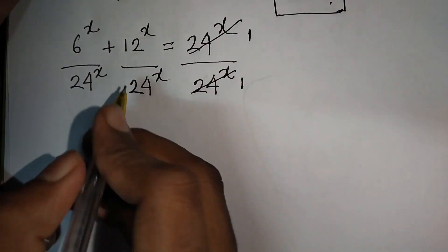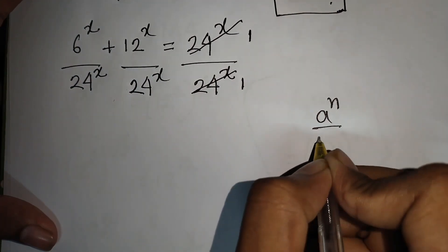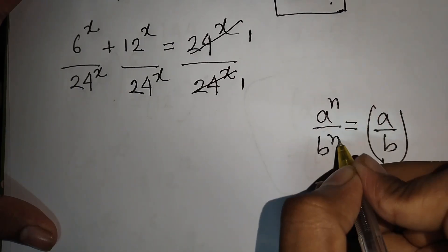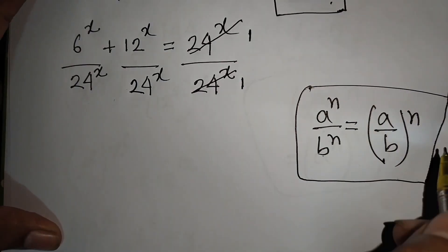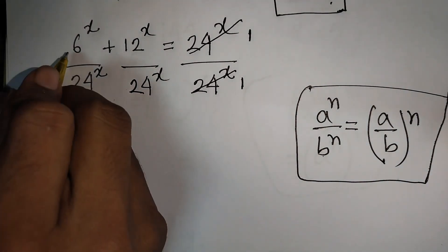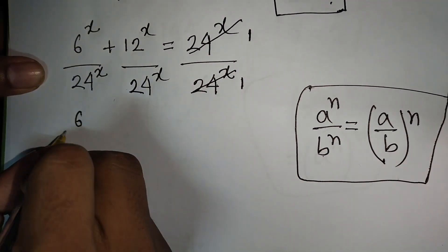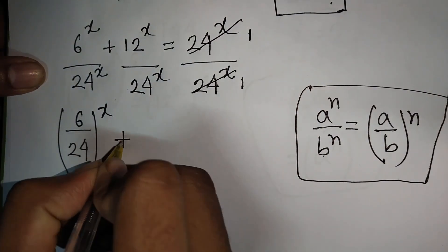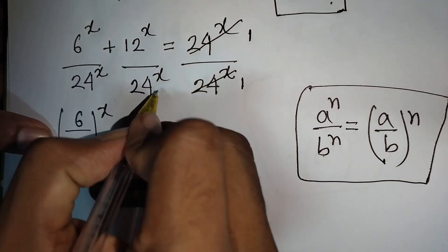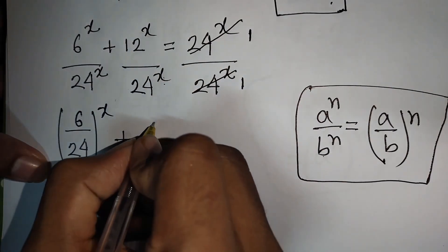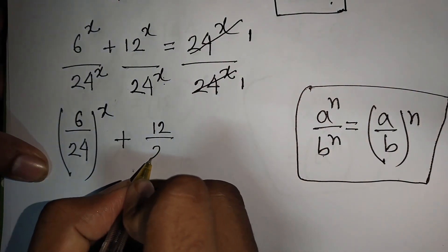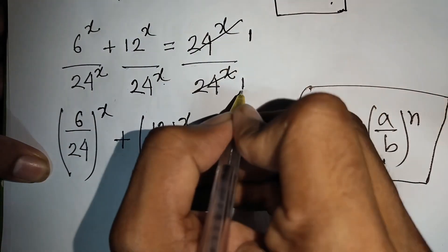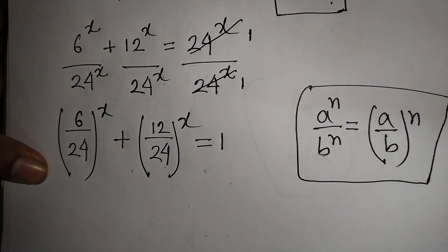We see x is the same power but with different bases. Remember the formula: a^n / b^n = (a/b)^n. Applying this rule, we get (6/24)^x + (12/24)^x = 1.